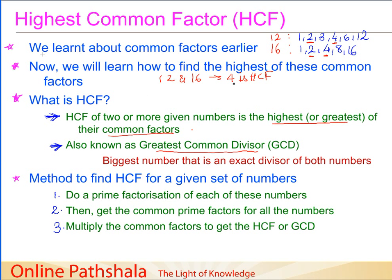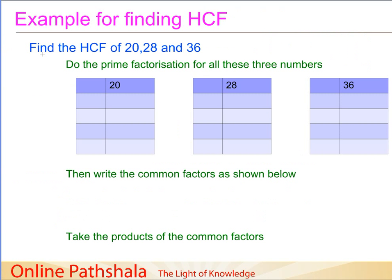For more than two numbers there is a formal method to find the HCF. The steps are: first, do a prime factorization for each of the numbers; second, get the common prime factors for all the numbers; and third, multiply the common prime factors together to get the HCF or GCD. This will make more sense when we work through an example.